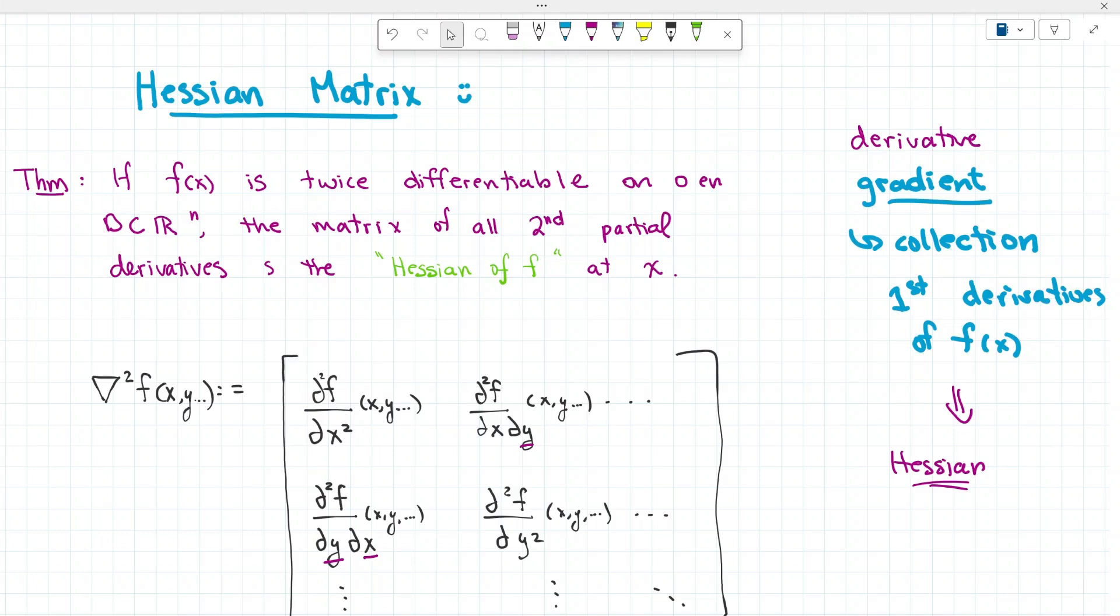We've had a lot of previous discussions about derivatives, partial derivatives, and gradients. Essentially, Hessian matrices are the next step up from gradients. When we have multivariable calculus and we're looking at taking the derivative, we take partial derivatives because we have more than one independent variable. That means we take the derivative with respect to each variable and hold the others constant. The gradient is that collection of first derivatives of f of x, but what if we take the derivative of the gradient? If you take the derivative of the gradient, you're going to end up with a Hessian matrix.